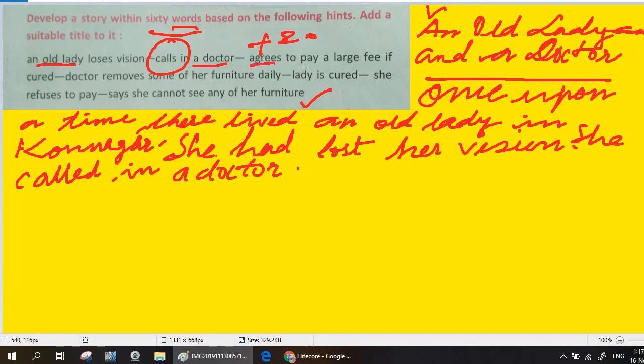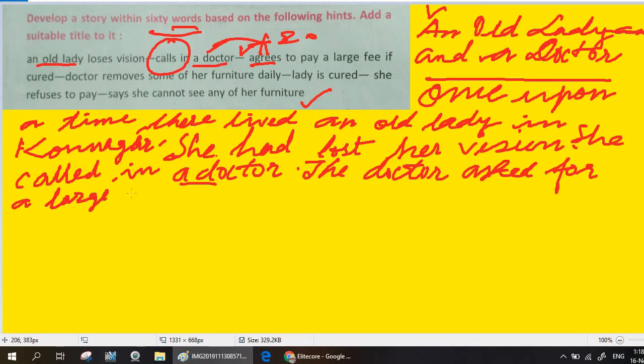Agrees to pay a large fee if cured. Now, if she called and the doctor is saying... the doctor demanded, asked for. Then she agreed. So we say: 'The doctor asked for,' or you could say 'demanded,' a large fee.